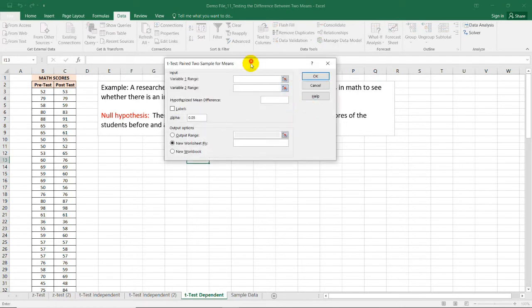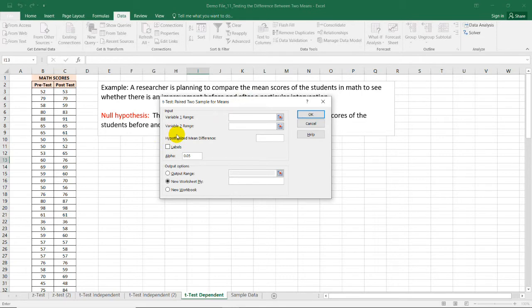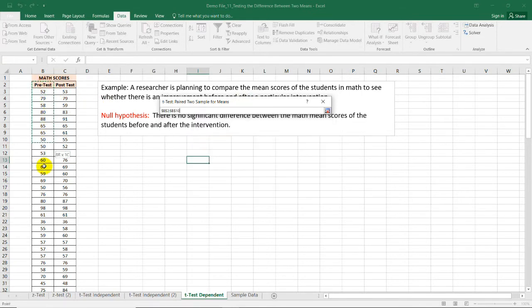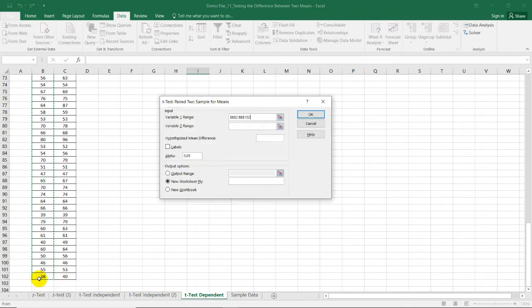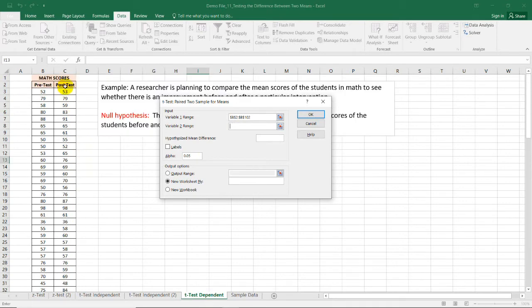Select OK and input each variable range. So in the first one, we have the pre-test including the label for the column. And on the second one, I'm going to select the post-test.